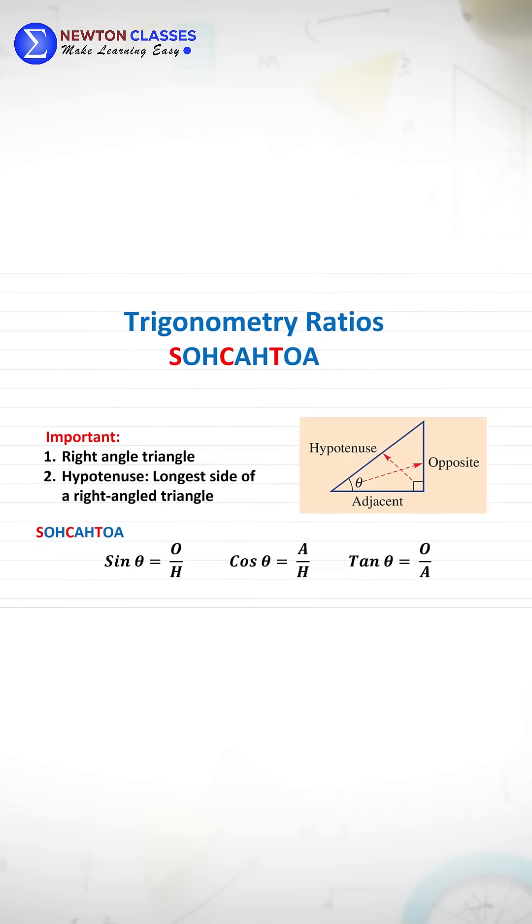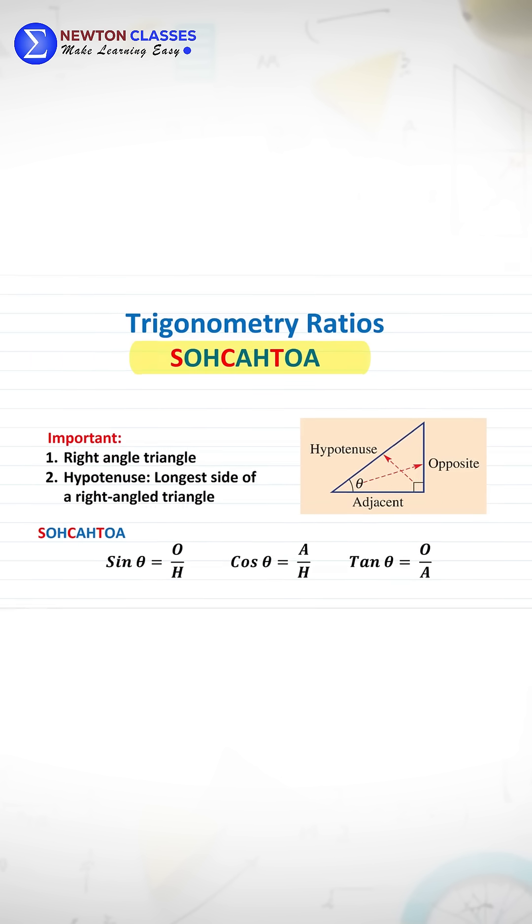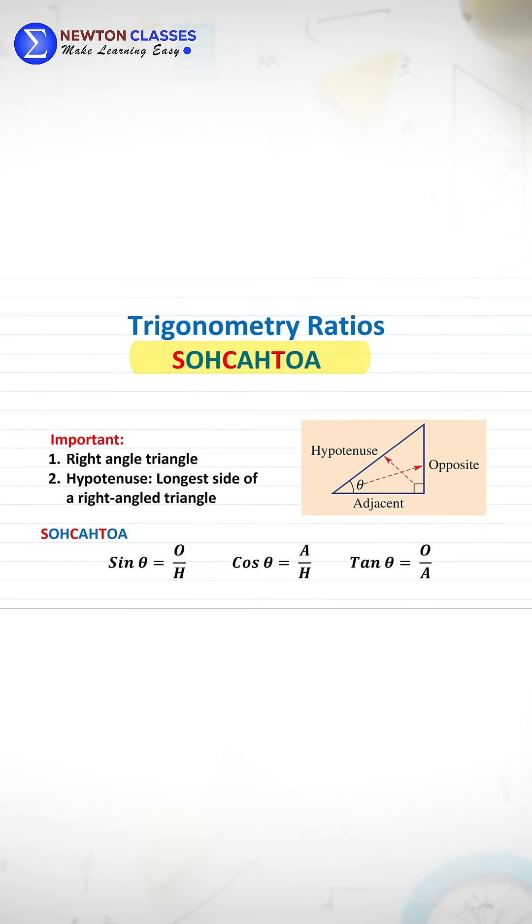Trigonometric ratios, popularly known as SOHCAHTOA, is the ratio of different lengths of different sides of the right-angled triangle.